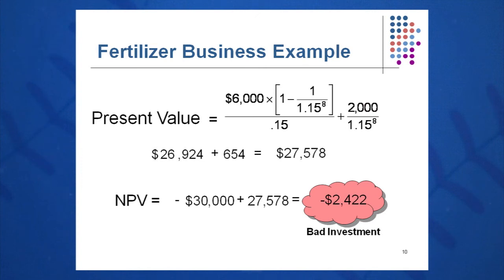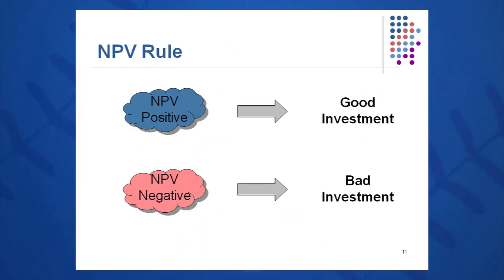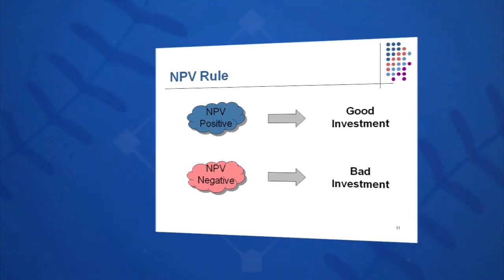At the fifteen percent discount rate, we get a negative NPV of negative two thousand four hundred twenty-two, so we have a bad investment here. The NPV decision rule is simply: NPV positive means good investment; NPV negative means bad investment.